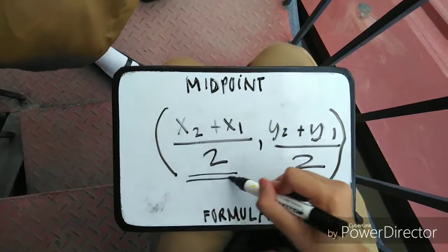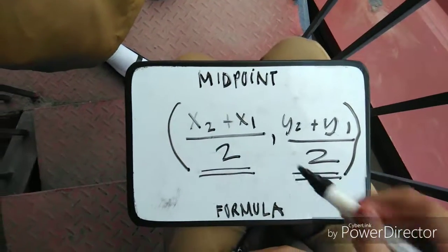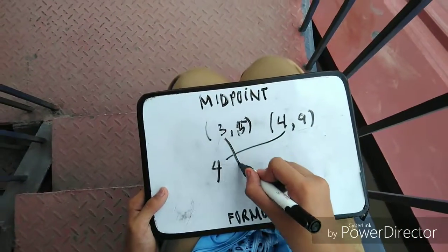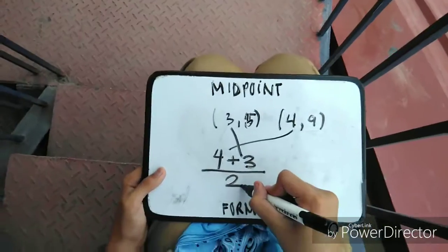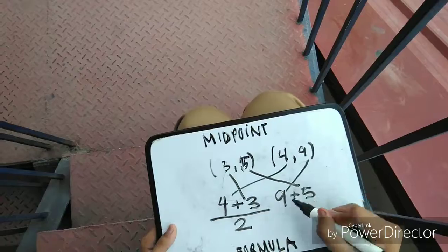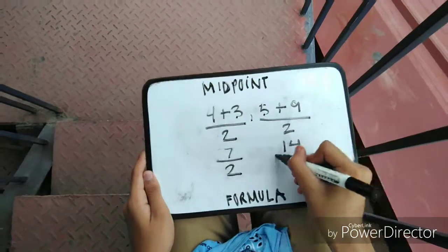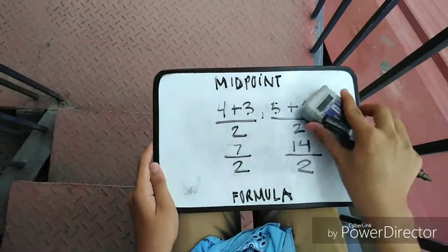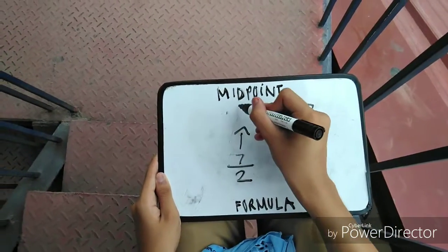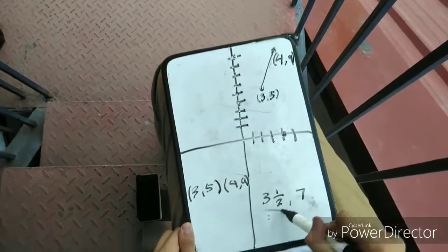For the midpoint formula, we have ((X₂ + X₁)/2, (Y₂ + Y₁)/2). For our example, we have the points (3, 5) and (4, 9). We substitute the given values: (4 + 3)/2 and (5 + 9)/2, which gives us 7/2 and 14/2, simplified to 3½ and 7. We plot the point (3½, 7), and we can see it is the exact midpoint of the line segment.